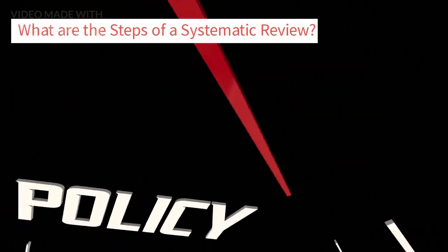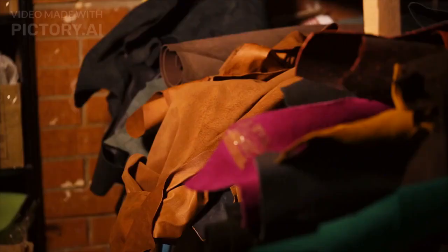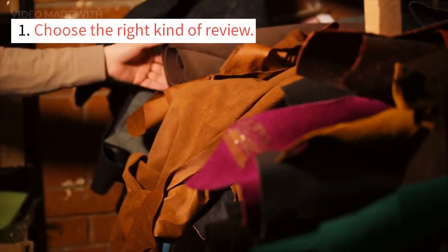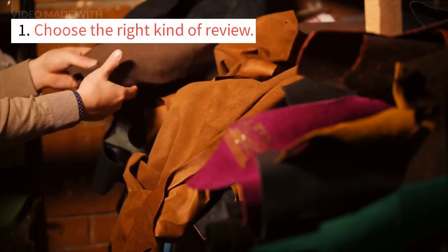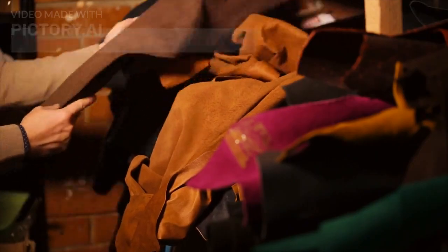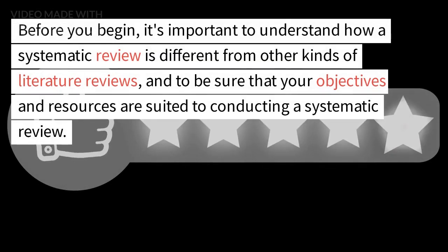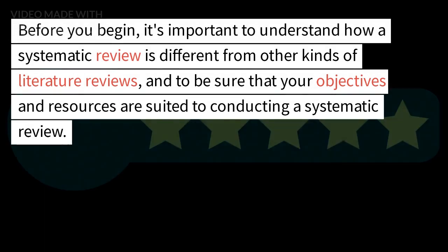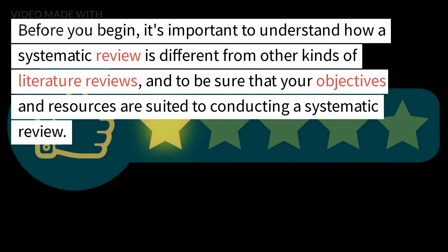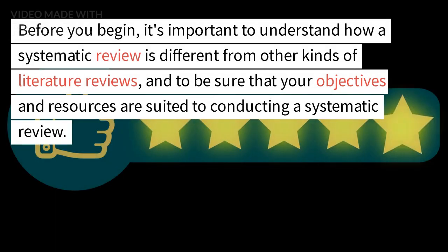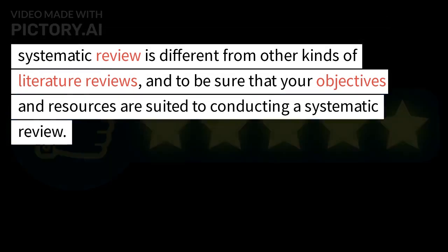What are the steps of a systematic review? First, choose the right kind of review. Before you begin, it's important to understand how a systematic review is different from other kinds of literature reviews, and to be sure that your objectives and resources are suited to conducting a systematic review.